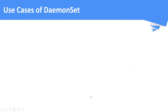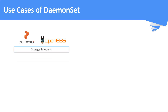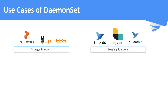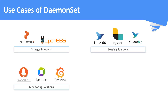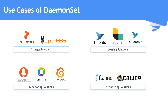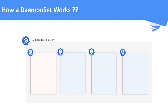Some of the use cases of a DaemonSet are: running a cluster storage daemon, running log collection daemons, running monitoring daemons, running pod networking daemons, and these are some of the third-party solutions in the relevant use cases. Now let's look at how a DaemonSet works.